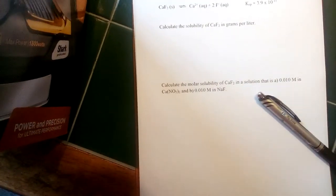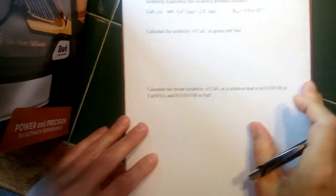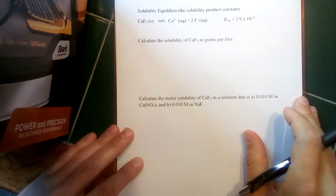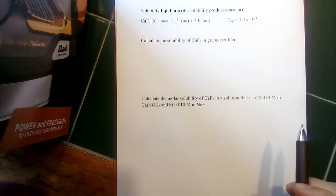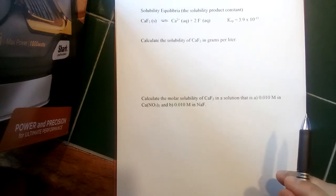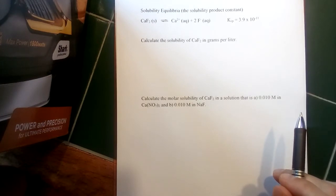Okay, now the other sort of new calculation that we want to look at and another type of equilibria that we haven't seen before is called solubility equilibria. So previously we talked about solubility rules and how certain salts are soluble in water and certain salts are insoluble in water.